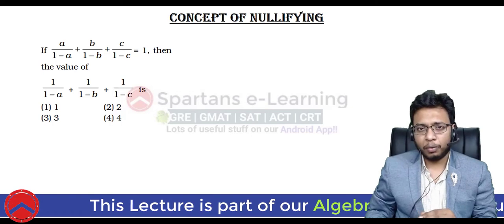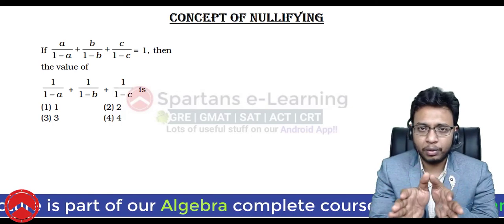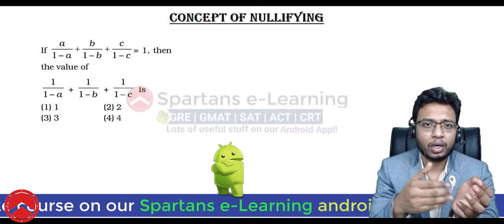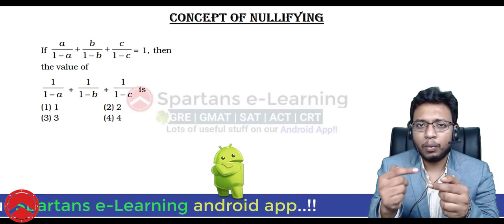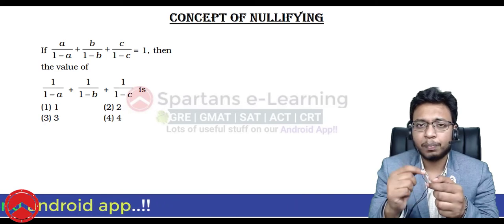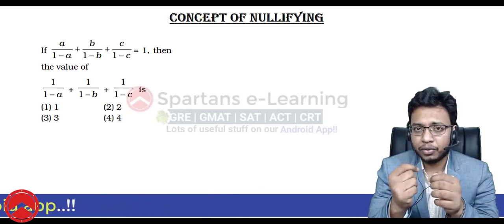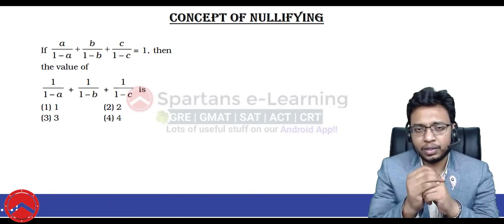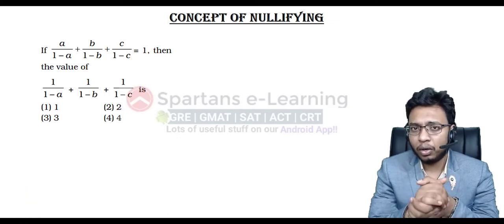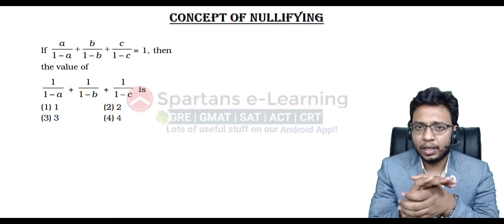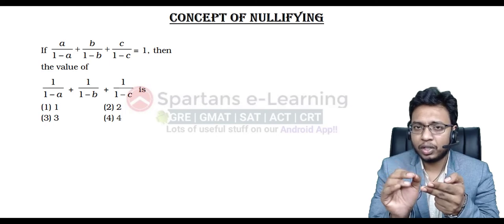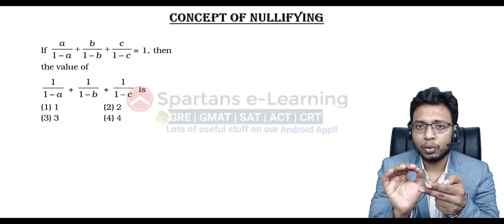The origin of this concept is: suppose you have one single equation and two variables. As I told you earlier in many lectures on mock courses or linear equations, if you have two variables and a single equation, then there is no way you can get a specific answer. There will be infinite number of solutions. To get a specific answer, you should have at least two equations.